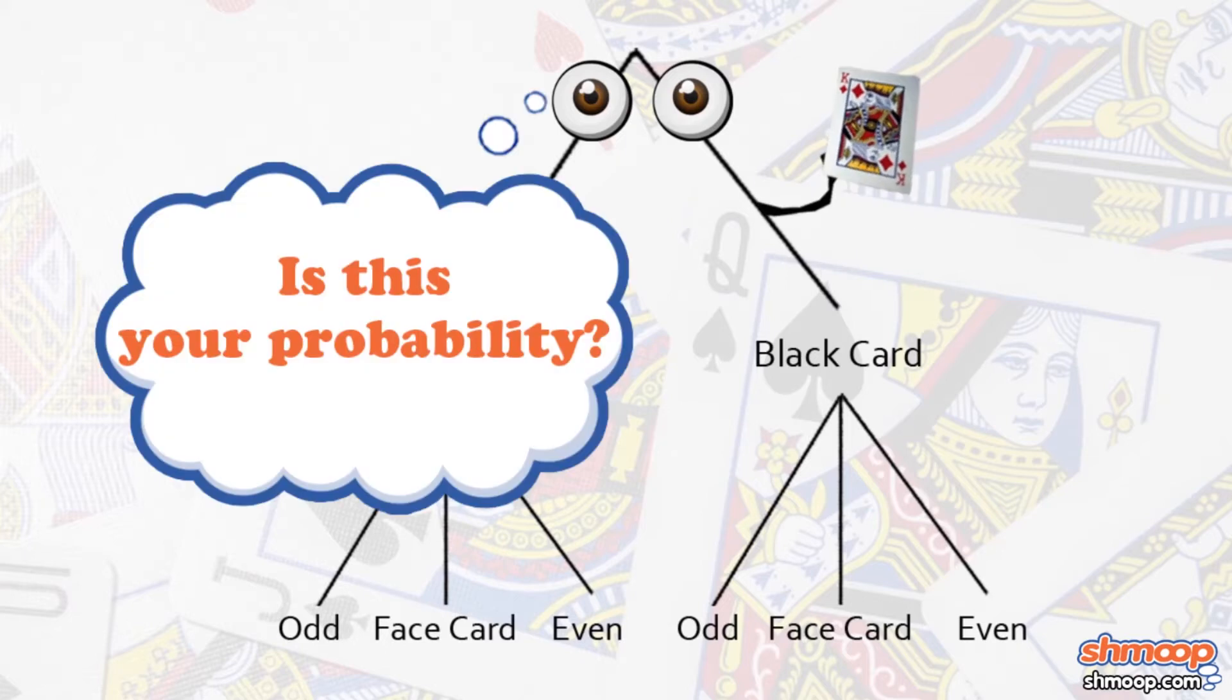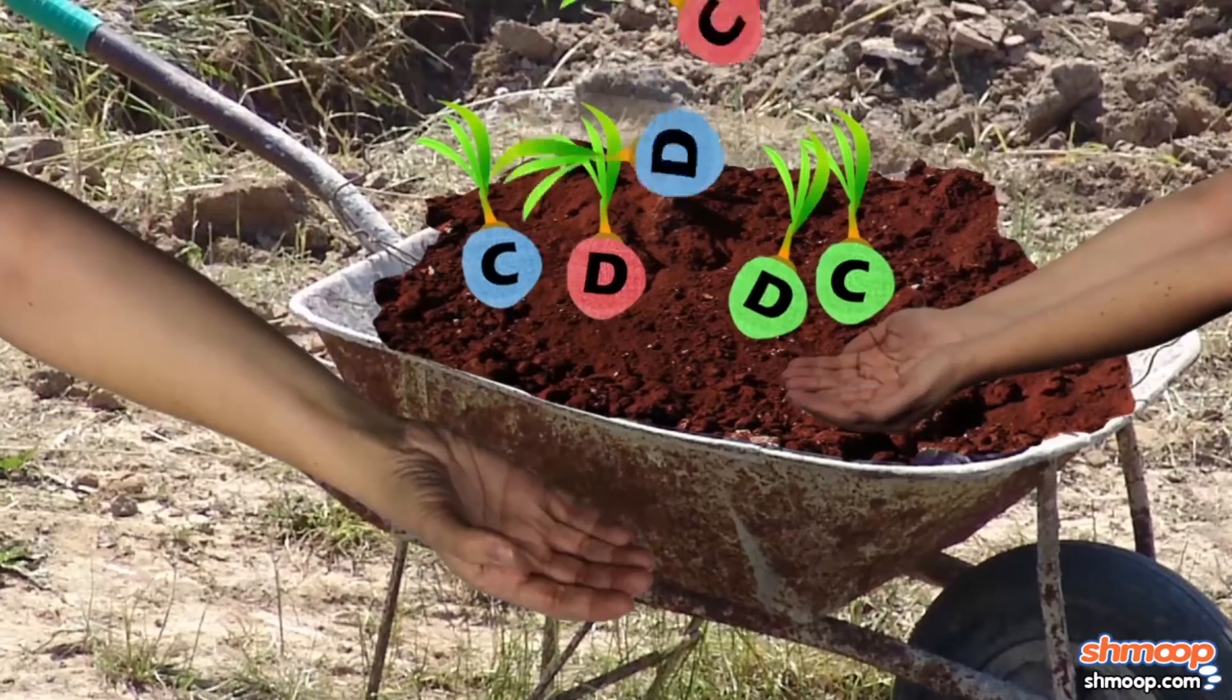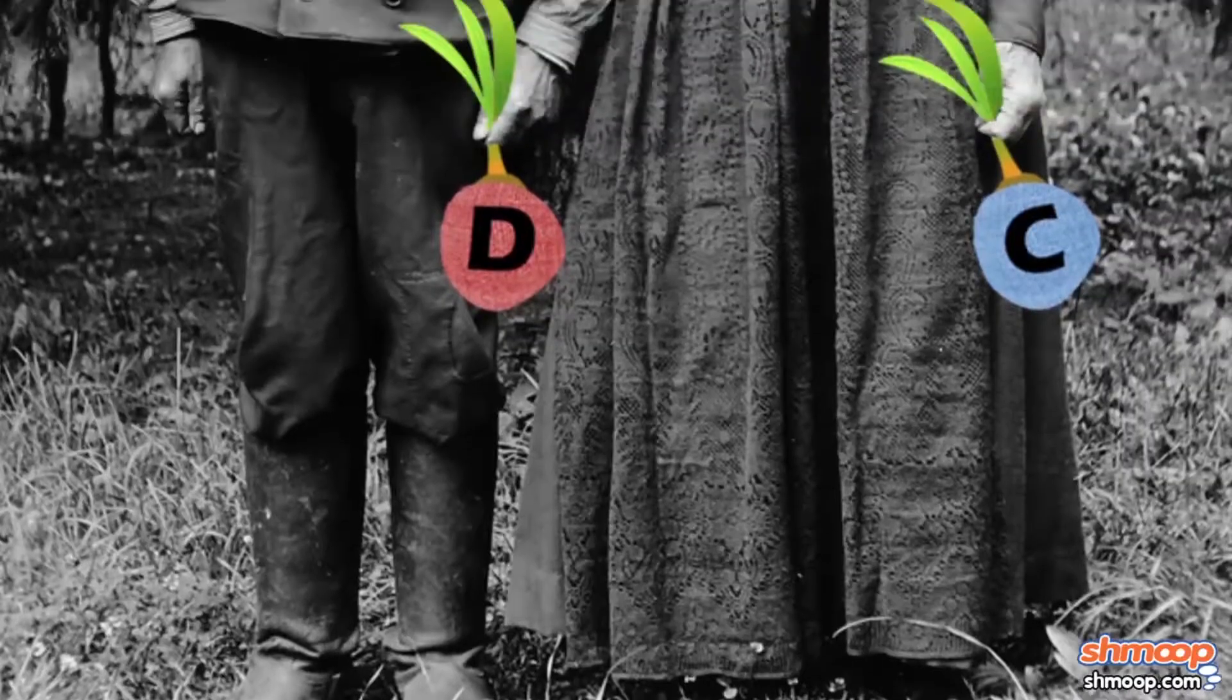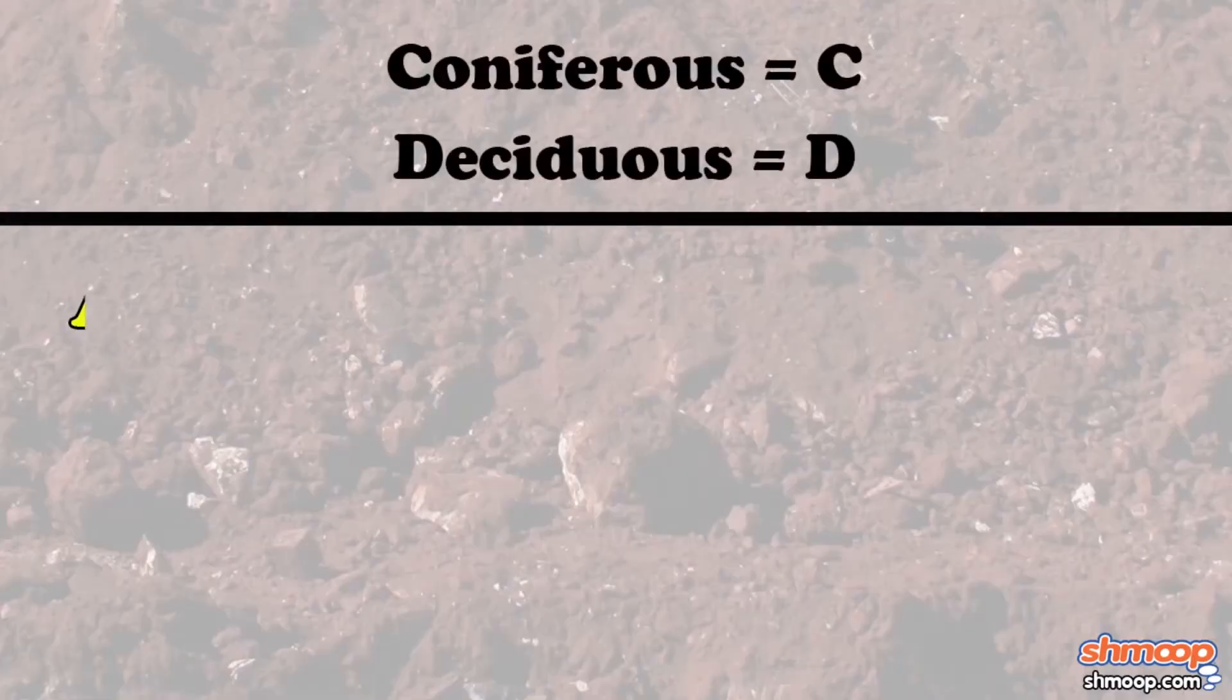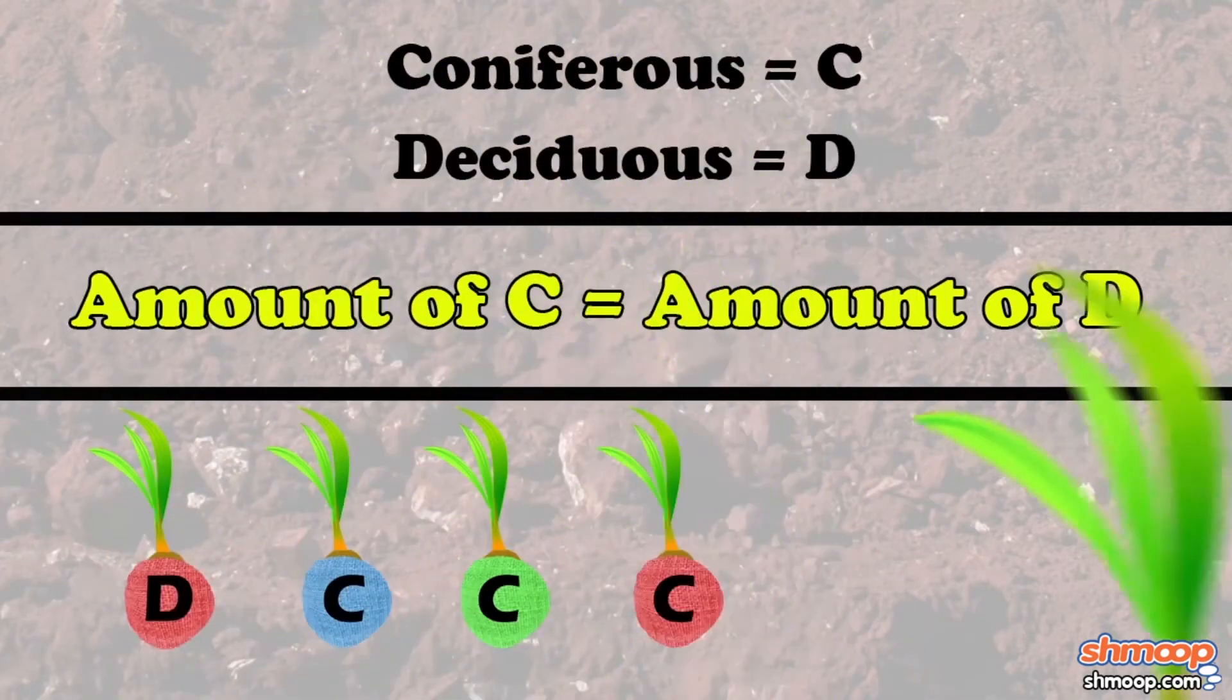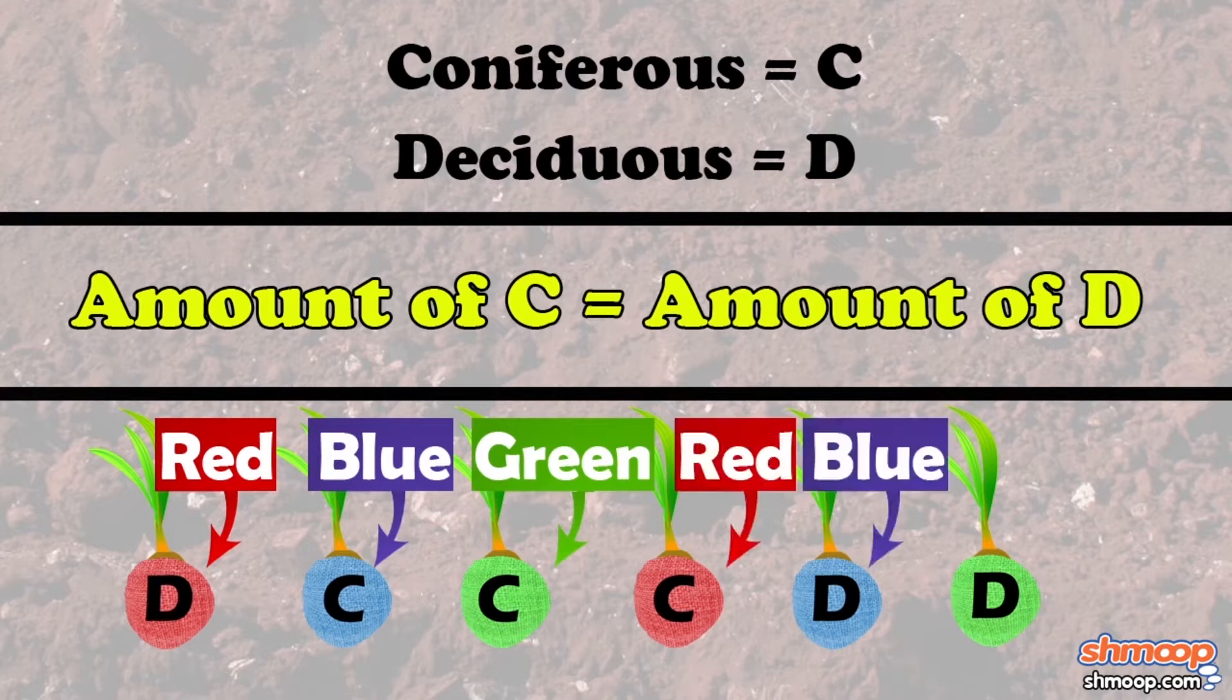We'll show you what we mean with a tree tree. Tree lovers have thrown a bunch of saplings into a wheelbarrow, and they've asked you to randomly pick one plant. No idea why they've asked you to do it. You must have a trustworthy face. Anyway, you're told there's an even split between deciduous and coniferous tree saplings. And the root balls are wrapped in an even distribution of red, blue, and green burlap.